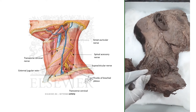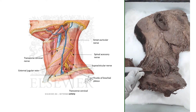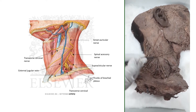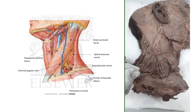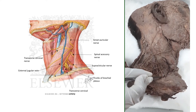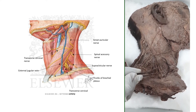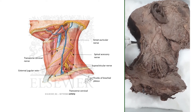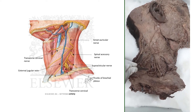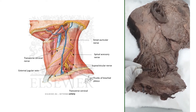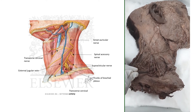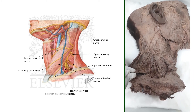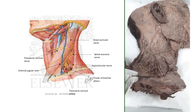This triangle is divided into two parts by the inferior belly of the omohyoid — one large upper triangle and one smaller triangle below. Above this muscle is the occipital triangle, and below the inferior belly of the omohyoid is the smaller supraclavicular triangle.